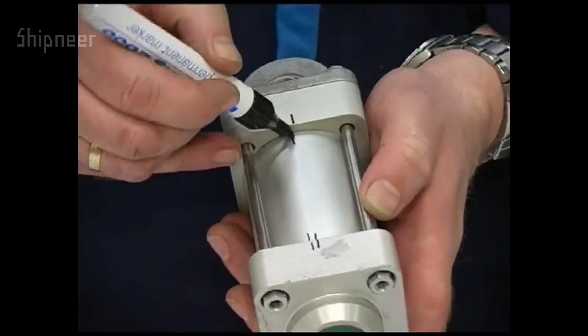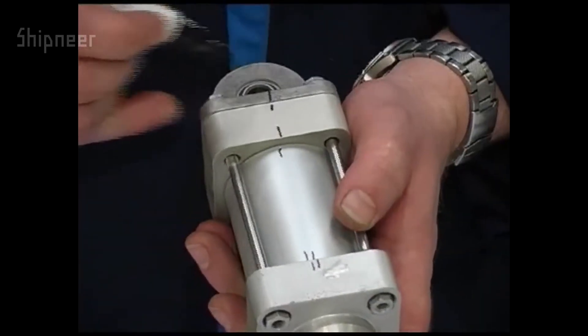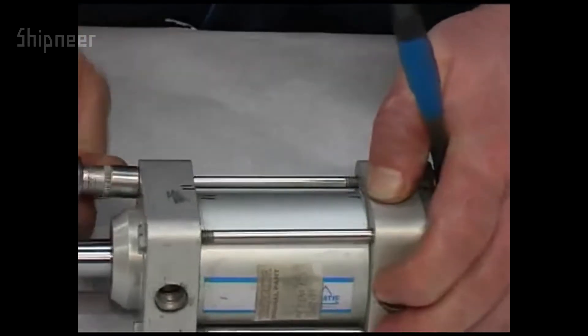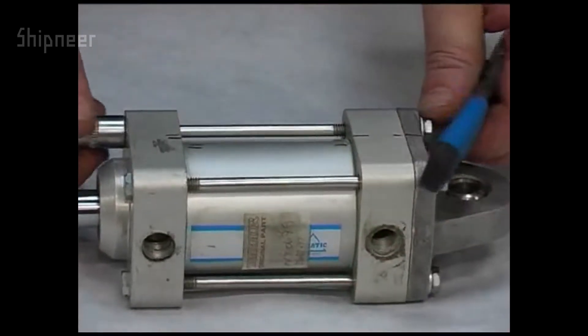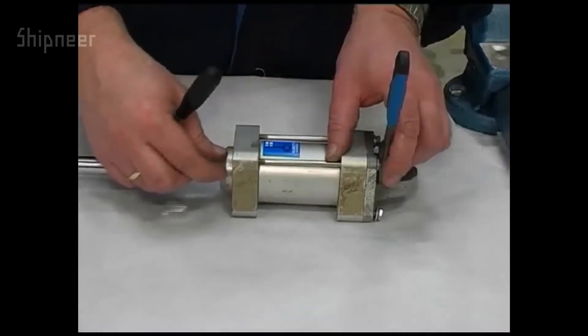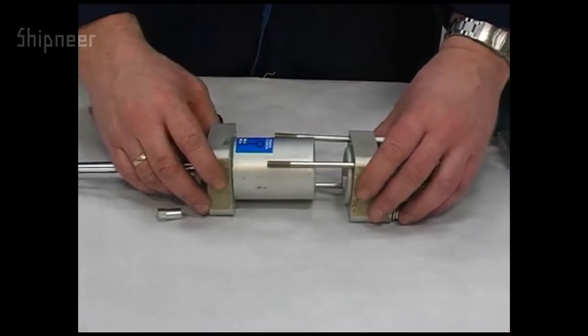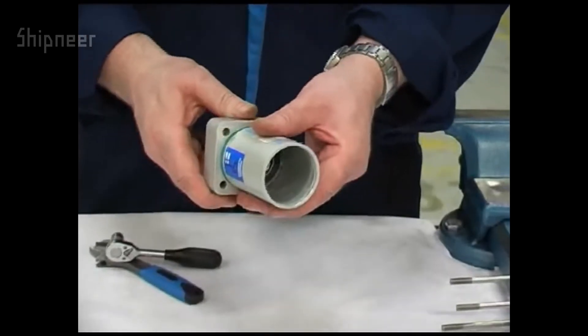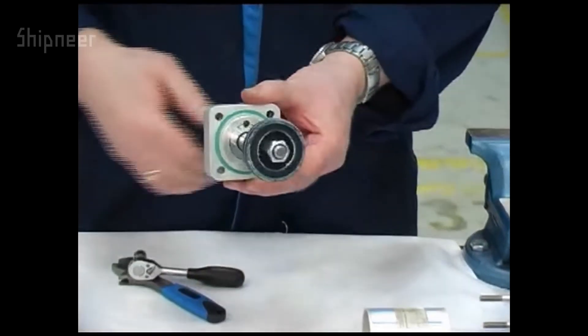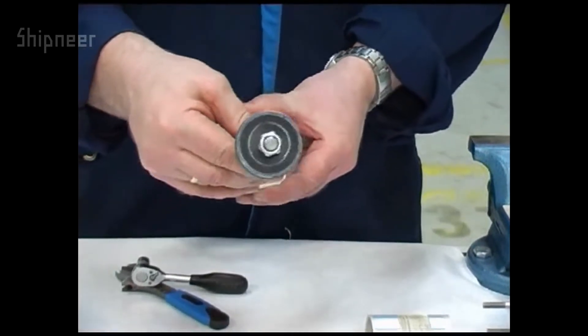Mark the position of the different sections with a marker. Loosen the four bolts. Remove the rod from the cylinder.